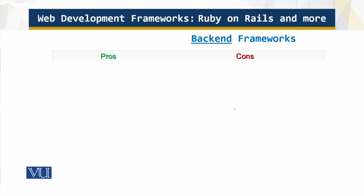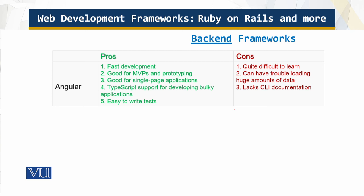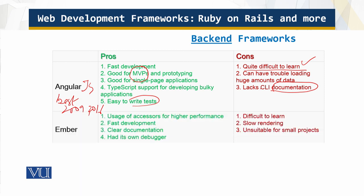Now let's look at some of the back-end frameworks, starting with Angular, which is generally considered the best. It is a Google product — its predecessor was AngularJS, first released in 2009, and Angular was completely rewritten in 2016. It is good for MVP and prototyping and easy to write tests for. However, it is quite difficult to learn with a steep learning curve, and there are also documentation issues around its CLI.